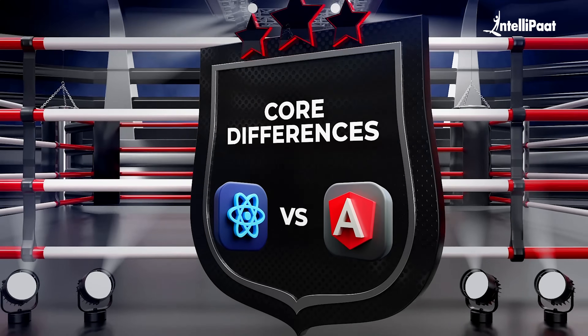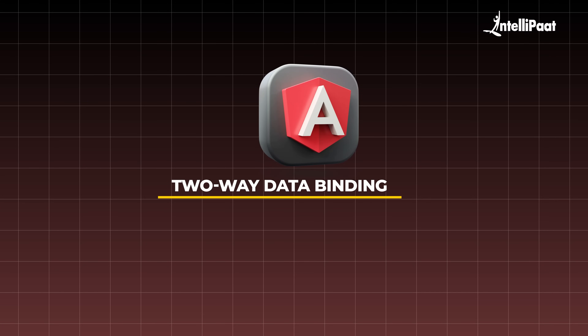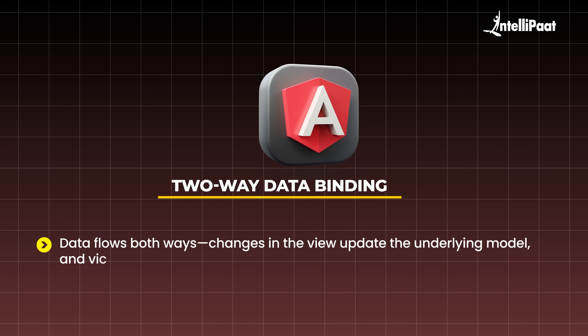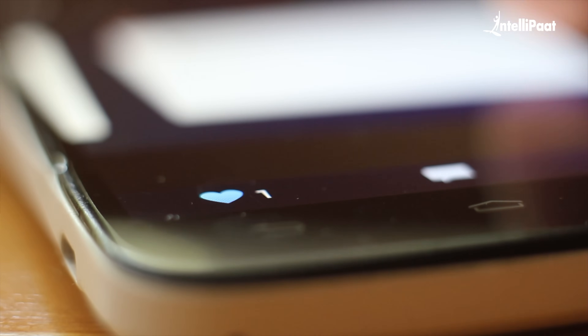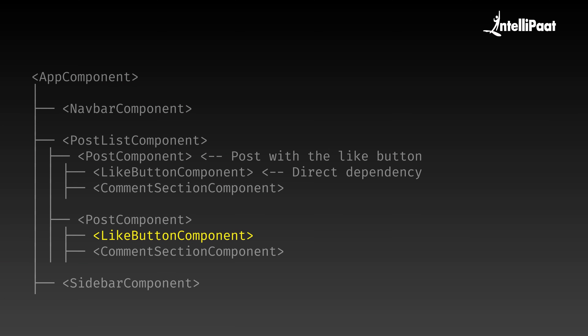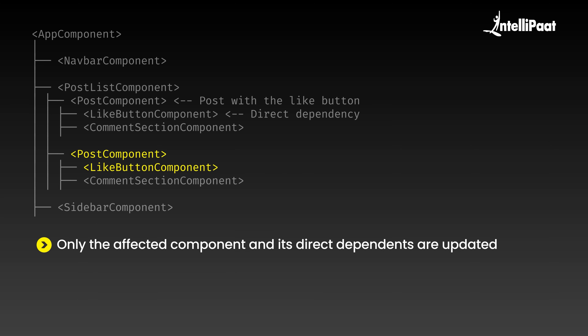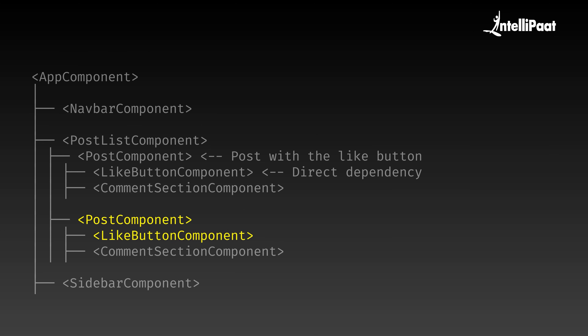Now that you know what they offer, let's look at why they behave the way they do. Angular uses two-way data binding, meaning data flows both ways — changes in the view update the underlying model as well, and vice versa. For example, let's say Instagram was built with Angular. When you like a post, Angular's change detection system scans the entire component tree to check if any data bindings have changed. It detects the change in the like button component inside the post component, and only the affected components and their direct dependencies are updated — meaning the post component, like button component, and comment section component. Other components like the navbar or sidebar remain untouched.